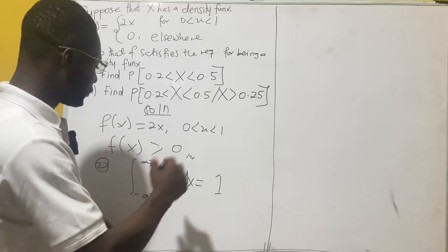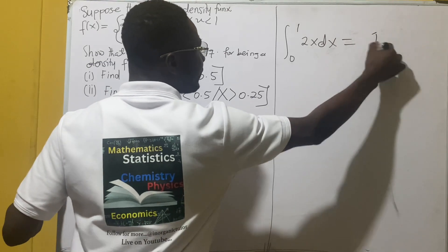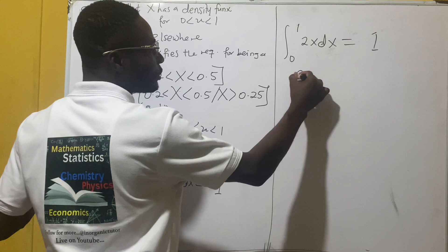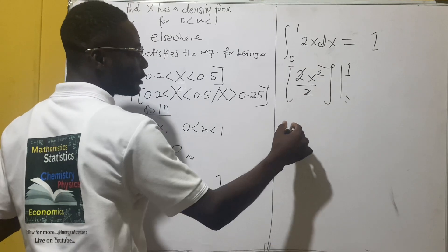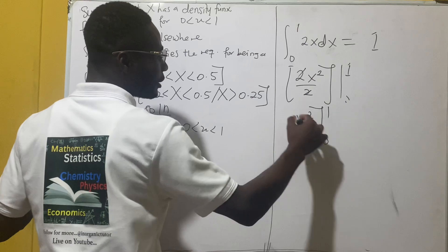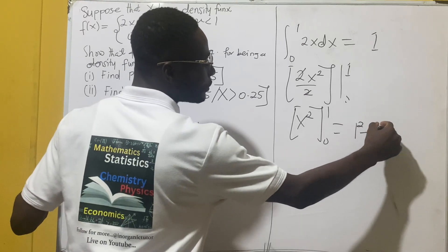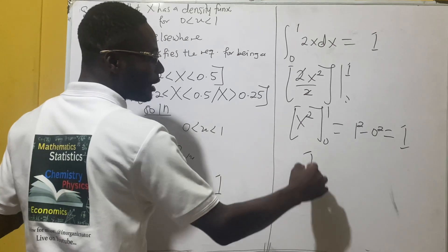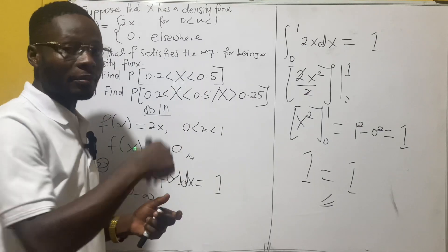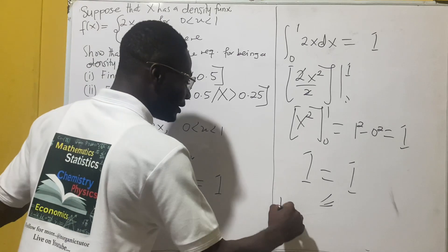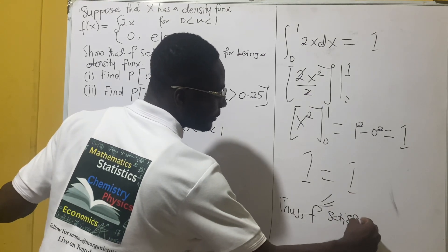For the second condition, we integrate from zero to one of 2x dx, and that should give us one. Integrating 2x we have 2x² over 2 on the limit zero to one, and the twos cancel, leaving x² from zero to one. Substituting the limits gives one squared minus zero squared, which equals one. So one equals one, and this satisfies the requirement for being a density function.